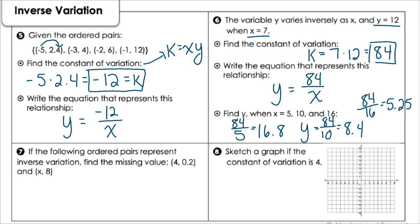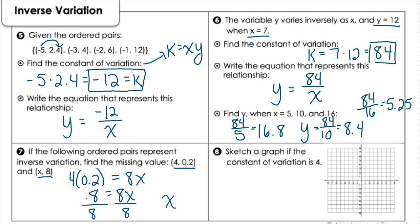For number seven, we have ordered pairs and want to find the missing value so the constant is the same for both. Multiplying y times x for each pair and setting them equal: I get 0.8 equals 8x. Dividing both sides by 8, the x coordinate that goes with 8 is 0.10.